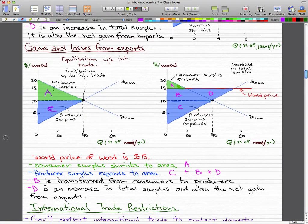So we've already known that consumer surplus shrinks to area A. Producer surplus expands to area C plus B plus D. So what actually happens is B was transferred from the consumers to the producers.